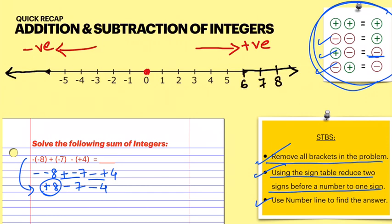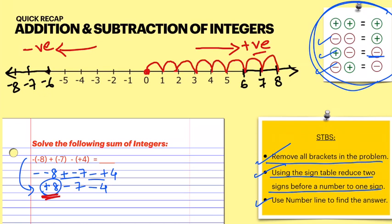We start with plus eight — since it's positive we go to the right: one, two, three, four, five, six, seven, eight. We've reached plus eight. Next is minus seven — minus means we go to the left: one, two, three, four, five, six, seven.